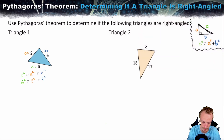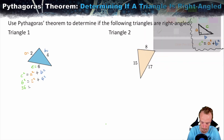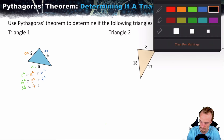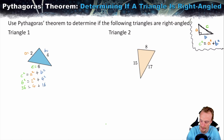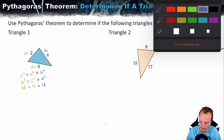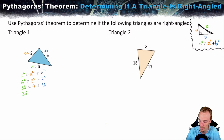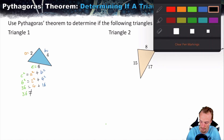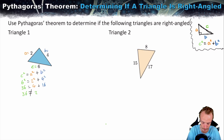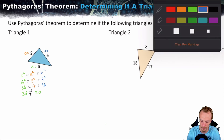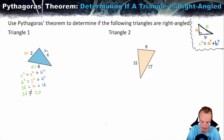Now we evaluate: 6 squared is 36, 2 squared is 4, and 4 squared is 16. We can clearly see that 36 does not equal 4 plus 16, which is 20. So we can determine that Pythagoras theorem does not hold, and therefore this is not a right-angled triangle.